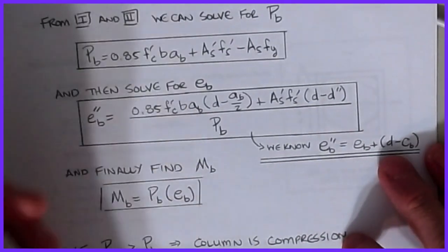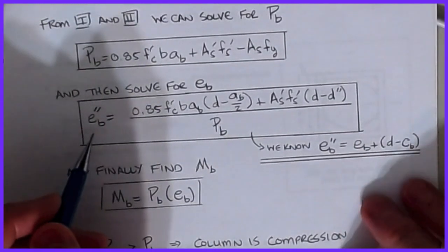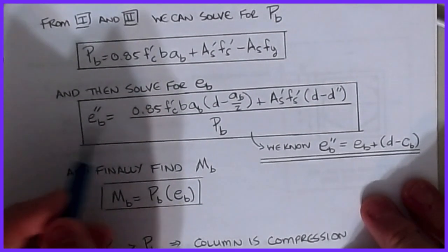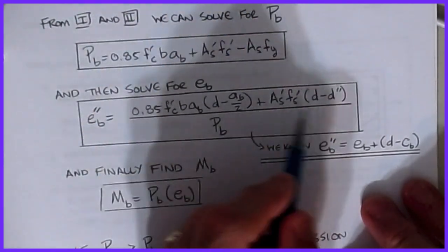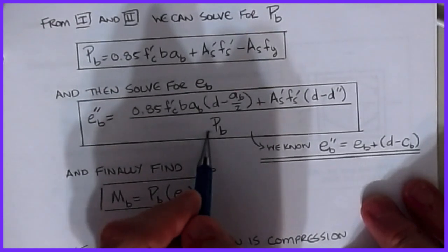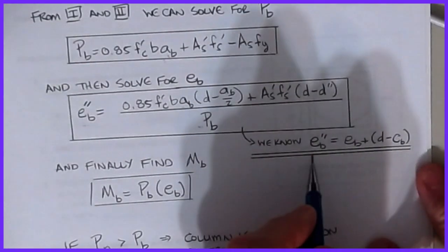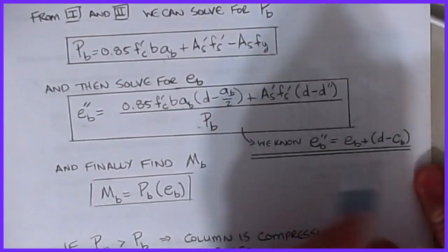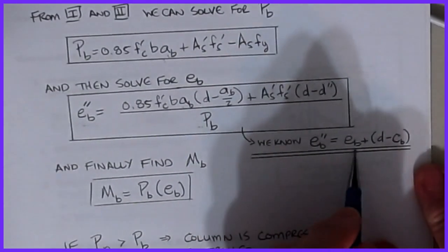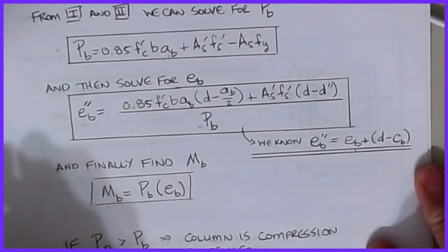Taking those formulas: from the force equation I solve for P_B first. Then since I now know A_B and therefore P_B, I can find E''_B from the moment equation. Then, since E''_B equals E_B plus (D minus C_B), I can solve for E_B. Finally, once I have P_B and E_B, I can calculate the balanced moment M_B equals P_B times E_B. It all flows through once you get P_B.